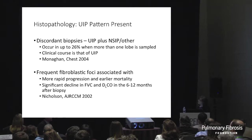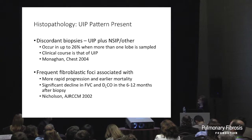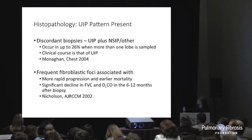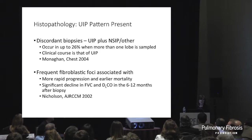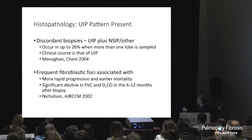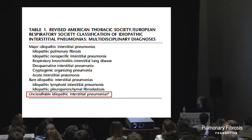If there are a lot of fibroblastic foci present, there is more rapid progression and earlier mortality, and a decline in spirometry and diffusing capacity in the 6 to 12 months after biopsy. In my pathology report, I try to mention whether fibroblastic foci are rare, occasional, numerous, or innumerable, to give some idea of the degree of disease activity — always remembering that the radiologist biopsies the whole lung while the pathologist has only a little wedge of a particular place.